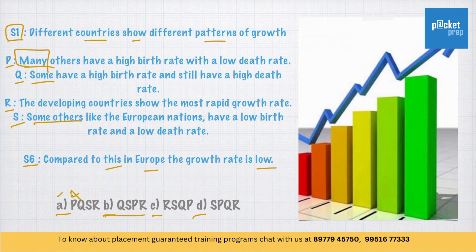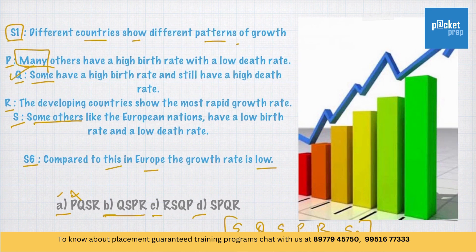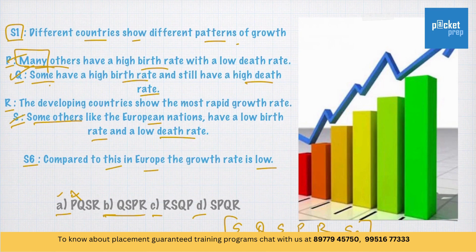What about Option B? The order is S1, Q, S, P, R, and lastly S6. Let's check this order. 'Different countries show different patterns of growth.' First Q: 'Some have a high birth rate and still have a high death rate.' Then S: 'Some others like the European nations have a low birth rate and low death rate.' Then P: 'Many others have a high birth rate with a low death rate.' And lastly R: 'The developing countries show the most rapid growth rate.' And finally statement 6: 'Compared to this in Europe, the growth rate is low.'